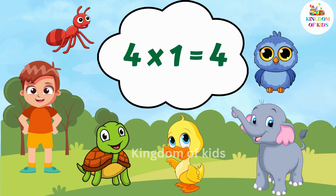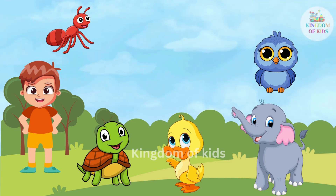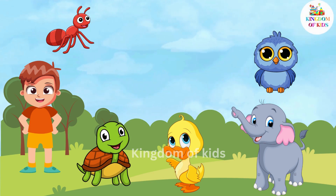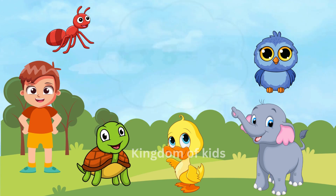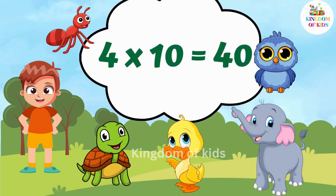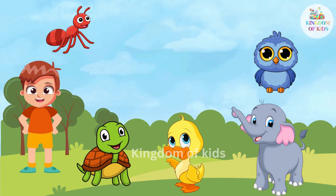Four ones are four. Four twos are eight. Four threes are twelve. Four fours are sixteen. Four fives are twenty. Four sixes are twenty-four. Four sevens are twenty-eight. Four eights are thirty-two. Four nines are thirty-six. Four tens are forty. Four elevens are forty-four. Four twelves are forty-eight.